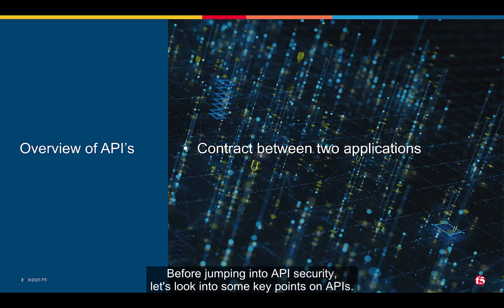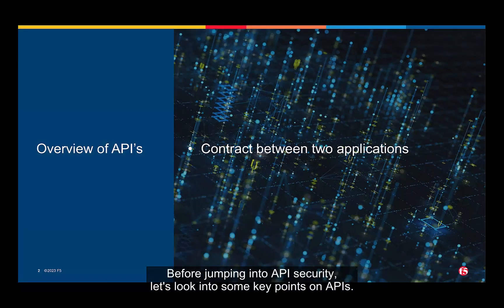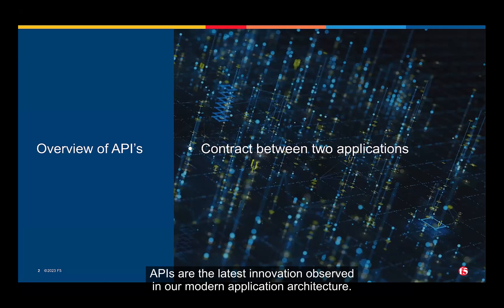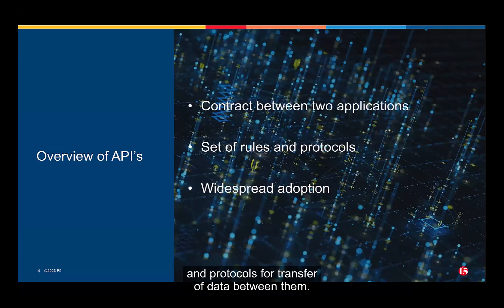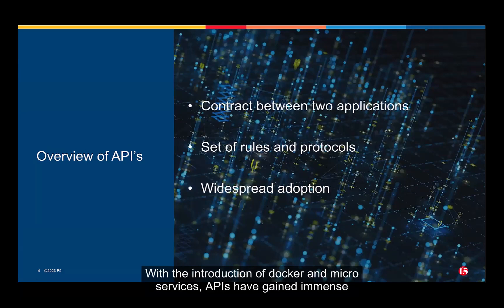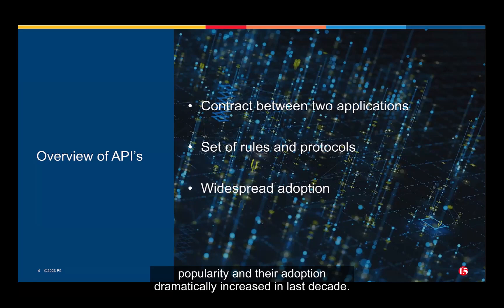Before jumping into API security, let's look into some key points on APIs. APIs are the latest innovation observed in our modern application architecture. An API is the contact between two systems so they can interact with each other. They follow a different set of rules and protocols for transfer of data between them. With the introduction of Docker and microservices, APIs have gained immense popularity and their adoption dramatically increased in the last decade.